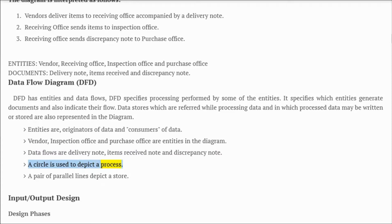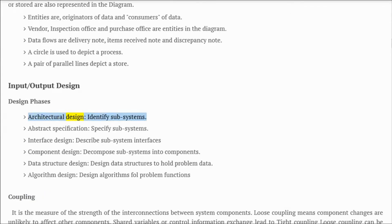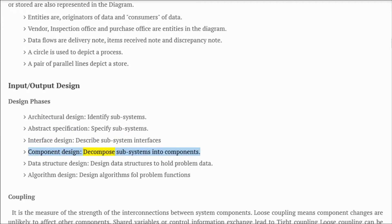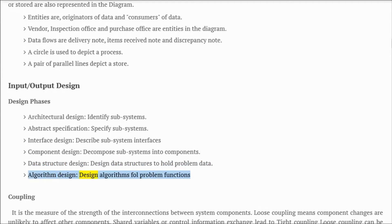A circle is used to depict a process; a pair of parallel lines depicts a store. Input/output design phases: architectural design — identify subsystems; abstract specification — specify subsystems; interface design — describe subsystem interfaces; component design — decompose subsystems into components; data structure design — design data structures to hold problem data; algorithm design — design algorithms for problem functions.